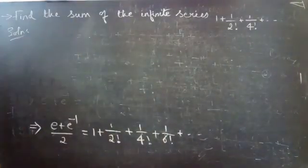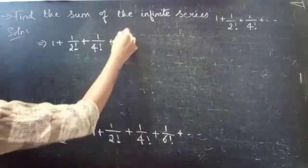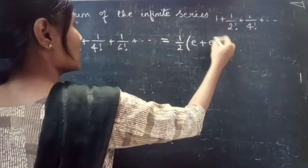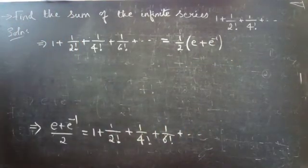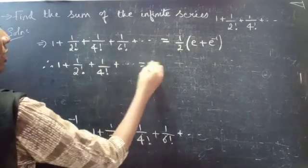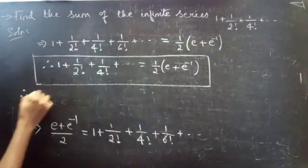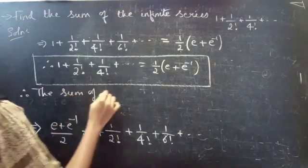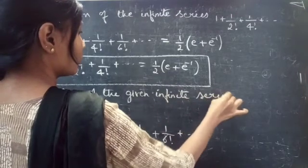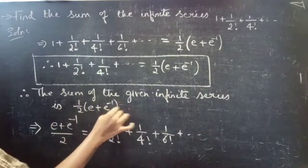So therefore the sum of the given infinite series 1 plus 1 by 2 factorial plus 1 by 4 factorial plus so on equals 1 by 2 into e plus e inverse.